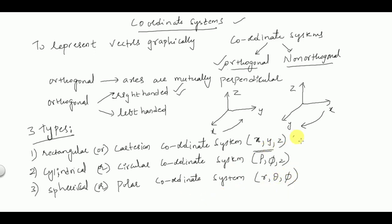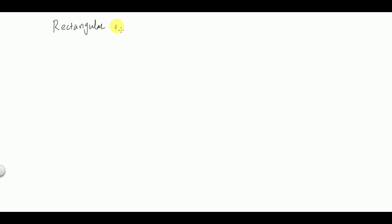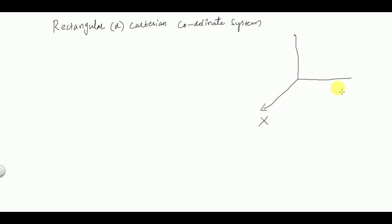These are the three coordinate systems in vector calculus, and we have to study each type along with their conversions from one coordinate system to another. The first coordinate system is rectangular or Cartesian coordinate system, where the axes are represented by x, y, and z. Following the right-handed system, any point P is represented by (x, y, z).